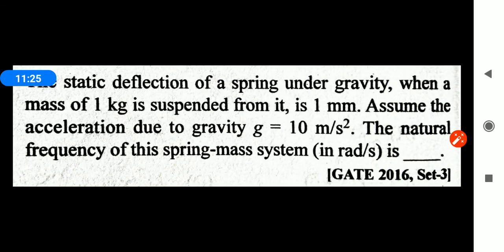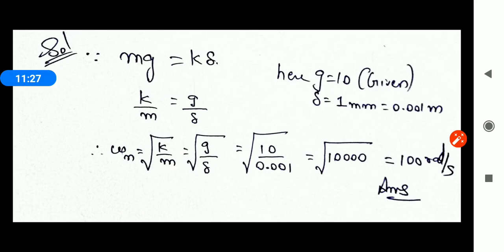We have solved some numerical results today. In the next lecture, we will talk about types of vibration — longitudinal, lateral, and transverse. Today's questions were only on longitudinal vibrations. In the next lecture, we will discuss transverse vibrations and torsional vibrations with numerical examples.